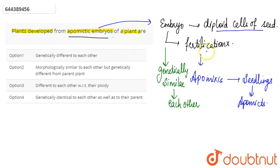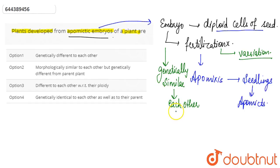In the case of fertilization, we get to see some variation because both parents are involved. But here, the embryo is not formed from fertilization — rather, it is formed from the diploid cells of the seed. For this reason, such embryos are found to be genetically similar to each other as well as to their parents.